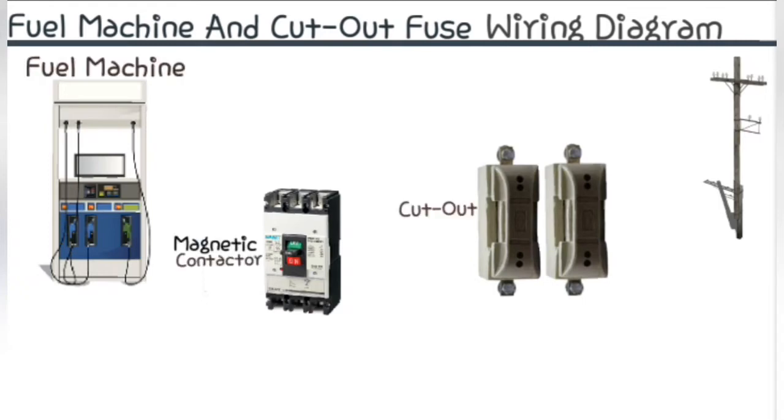Here we have fuel machine, magnetic contactor, cut out fuse, and an electric pole. Magnetic contactor or MCB are also called a three pole circuit breaker. Now let's start wiring.